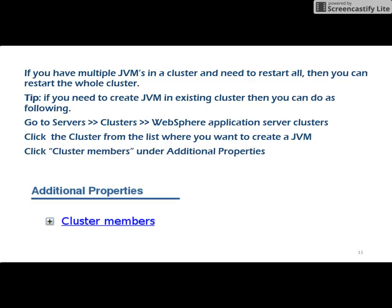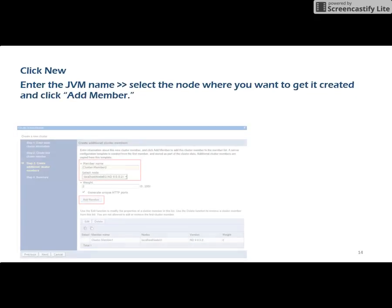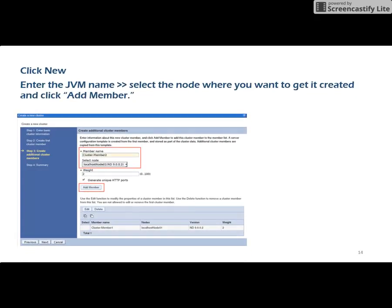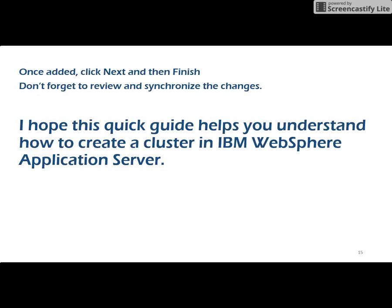If you need to create a JVM in an existing cluster, you can do it as follows. Login to the DMGR console, go to Servers, then go to Clusters, and then go to WebSphere Application Server Clusters. Click on the cluster from the list where you want to create a JVM. Click Cluster Members under Additional Properties, then click New. Enter the JVM name and select the node where you want it created. Click Add Members, then click Next and Finish. Don't forget to review and synchronize the changes in the master console.